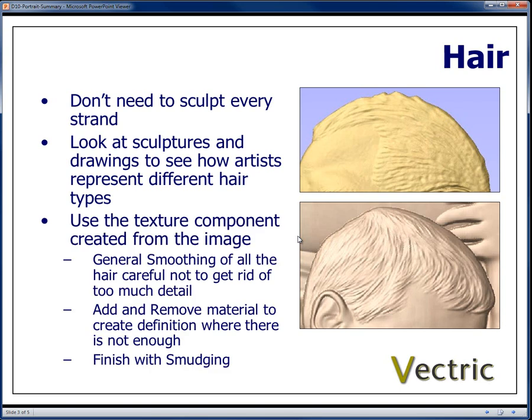Typically the best way to model hair is to use the texture component created from the image to give it one quick pass with a general smoothing, being careful not to get rid of too much detail. Add and remove material to create extra definition, because often there isn't enough definition to show the raised and recessed areas of the hair. Once you've added that extra material to accentuate what's already there, you're going to finish it off with smudging — that's what allows you to get the flow and the more general shape as it goes between the strands of hair.